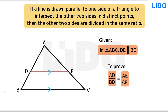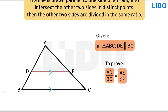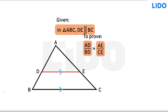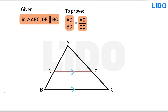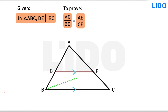In order to prove this, let's do some construction. We will connect points B and E. Points C and D will also be connected. Next, we will draw DY perpendicular to AC and EX perpendicular to AB.